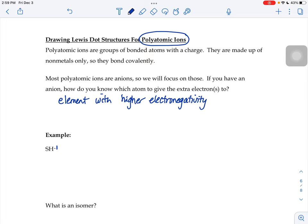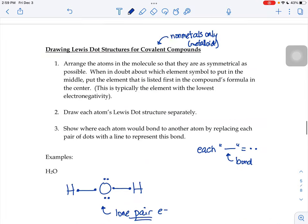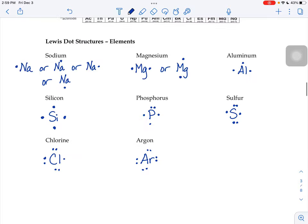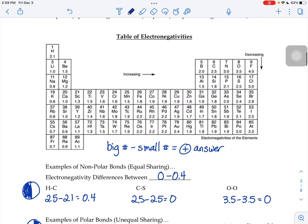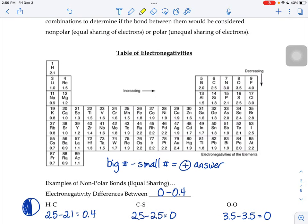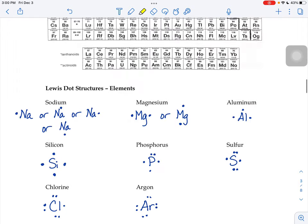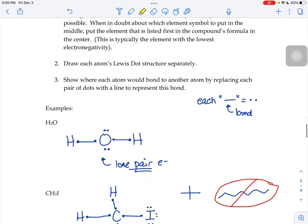If I look at my electronegativity value chart from before, right here, and we compare sulfur 2.5 to hydrogen 2.1, sulfur can attract electrons better than hydrogen can. So in my picture, sulfur is going to be the winner.